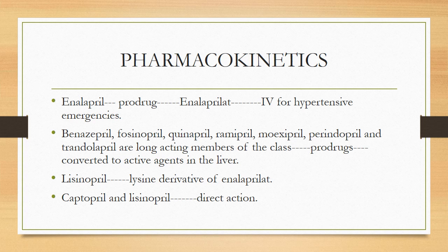Lisinopril is a lysine derivative of enalaprilat. Captopril and lisinopril are the two drugs with direct action — they are not prodrugs and do not need to be converted into an active form in the liver. They act directly. All subsequent members are prodrugs, and each member converts into an active agent in the liver.